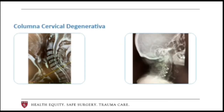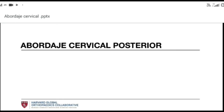Another example of the anterior cervical approach is in the degenerative spine. In this case, there is an elderly chronic smoker who had a narrow cervical canal, and through this approach we worked on three levels performing decompression and arthrodesis. Now we are going to talk about the posterior cervical approach.